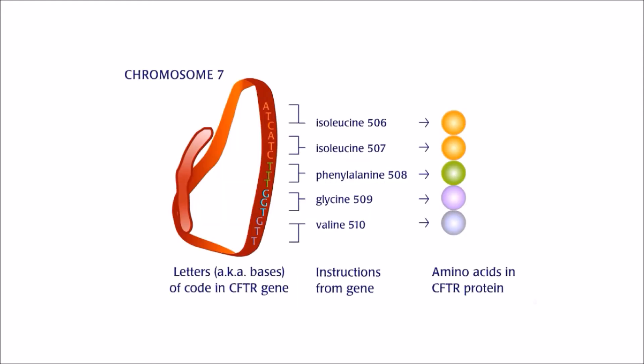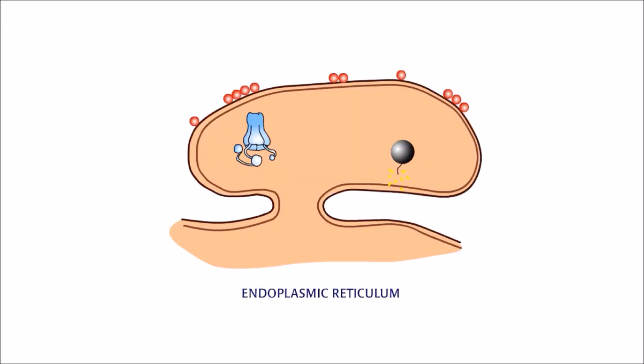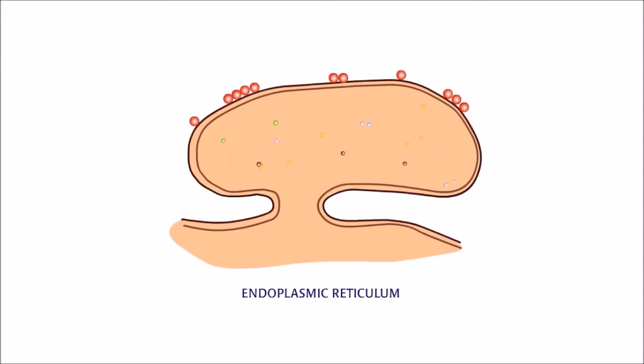A very small change in the CFTR gene causes this. Three letters of code are missing from the gene's total 6,100 codes, which had the instruction for putting the amino acid phenylalanine at position 508 in CFTR. Thus, the name of this mutation is Delta F508. CFTR is made, but the cell's quality control system sees this as an error and flags the protein for destruction.